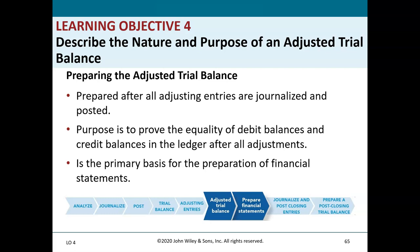The nature and purpose of an adjusted trial balance: after all adjusting entries are journalized and posted, we prepare an adjusted trial balance. Its purpose is to prove the equality of debit balances and credit balances in the ledger after all adjustments. We first proved debits equaled credits in the unadjusted trial balance, made new entries, posted them, and now verify balance again. The adjusted trial balance is then used as the primary basis for preparing financial statements.